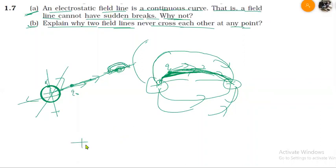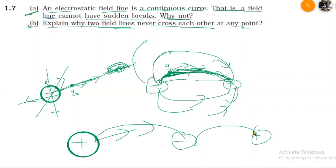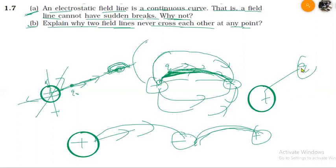For a positive charge alone, the field lines go to infinity. But when there is a negative charge present, the field lines from positive will end at the negative charge. The field line ends when it meets another charge, so a break only occurs at a charge location, not in free space.